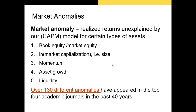There are also other anomalies, like the momentum anomaly, which refers to the fact that stocks that have outperformed the market for the last six months will continue to outperform. There's also an asset growth anomaly — firms in the highest decile of total asset growth underperform the market in the future. The liquidity anomaly is another well-known one. In fact, there are well in excess of 130 different anomalies that have been noted in top finance journals in the last 40 years.